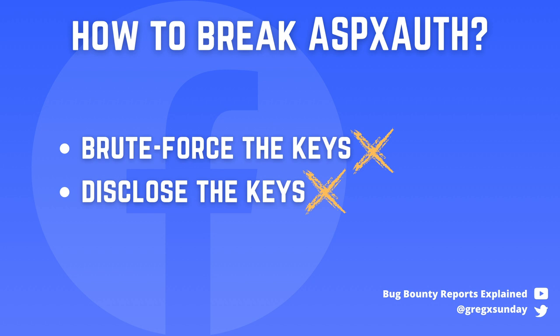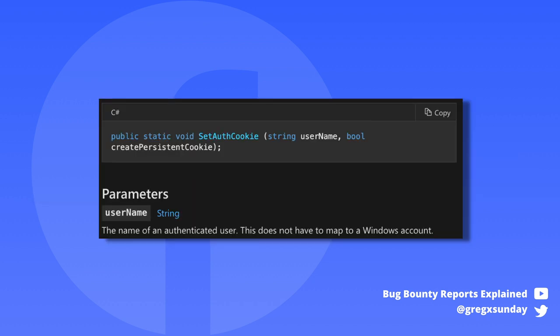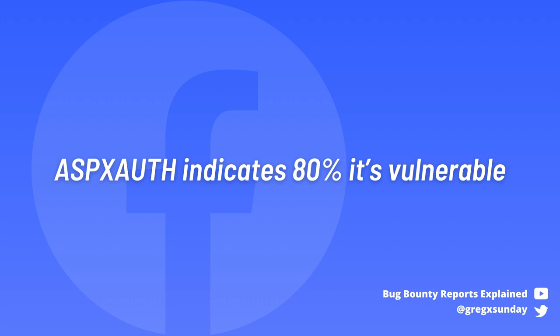But the bug hunter assumed this application was vulnerable as soon as he saw that cookie name. Why was that? The documentation tells you to just provide the username — no user ID, no application ID, nothing like that. Importantly, your username is shared across many different applications. That's not a problem until you use different keys for different websites. According to the blog post, only 20% of applications do this properly and 80% of them are vulnerable.